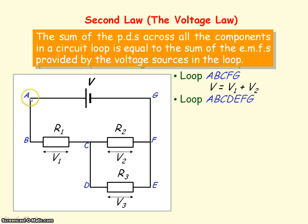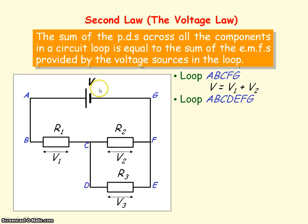For loop A-B-C-D-E-F-G, the components in that loop are R1 and R3. So the sum of the PDs of these components are V1 plus V3, and they will equal the sum of the EMFs in the loop, which is from our battery EMF V. So we can say V will equal V1 plus V3.